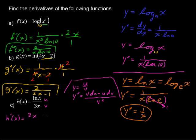h prime of x, the first derivative is v du. So, 3x times the derivative of u. So, that is times 1 over x minus u dv. So, minus natural log of x times derivative of the lower, that is 3, over 3x quantity squared. I'm going to jump to it. That's 9x squared because 3x times 3x is 9x squared. Now, I can clean this up a little bit.